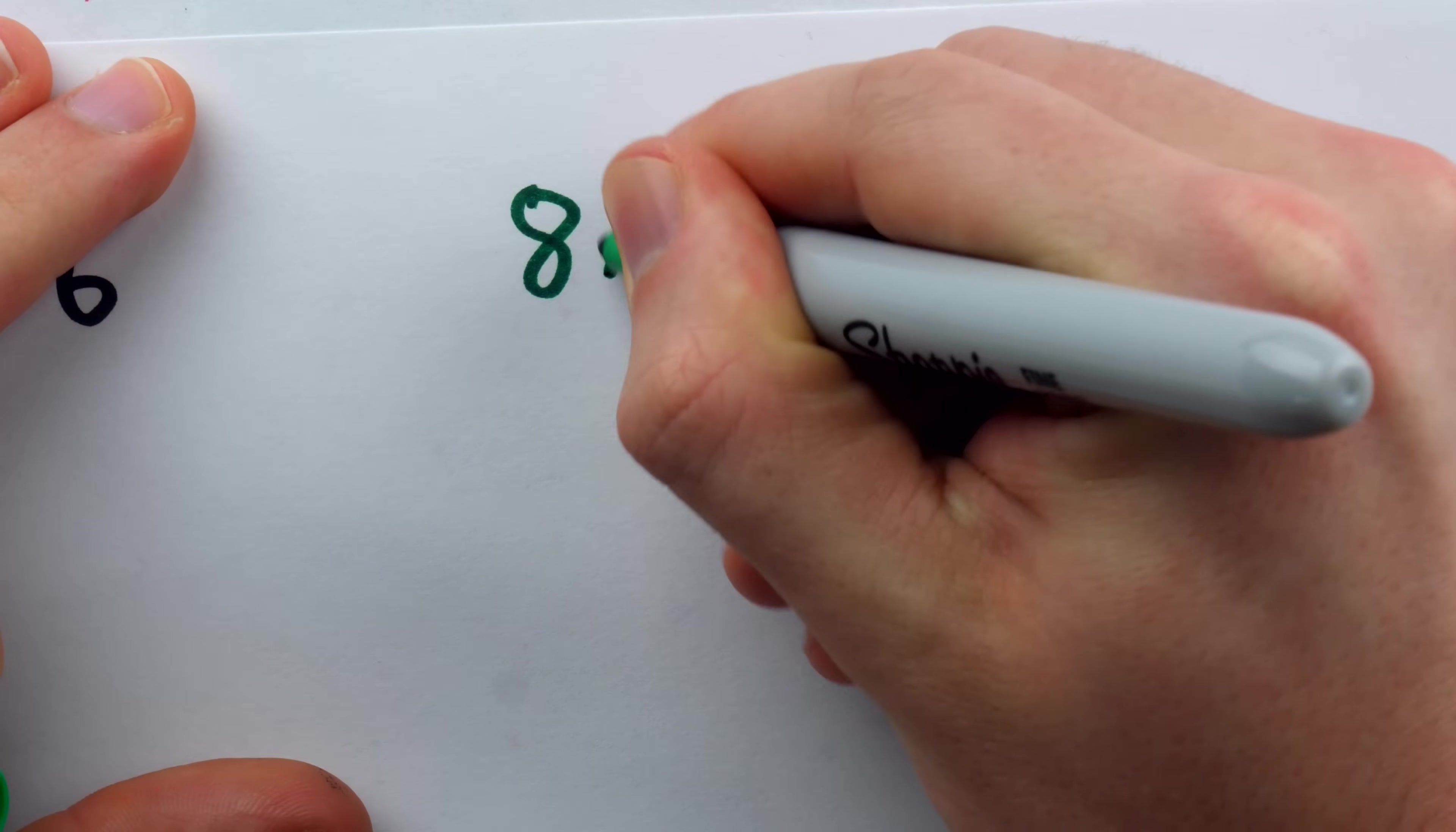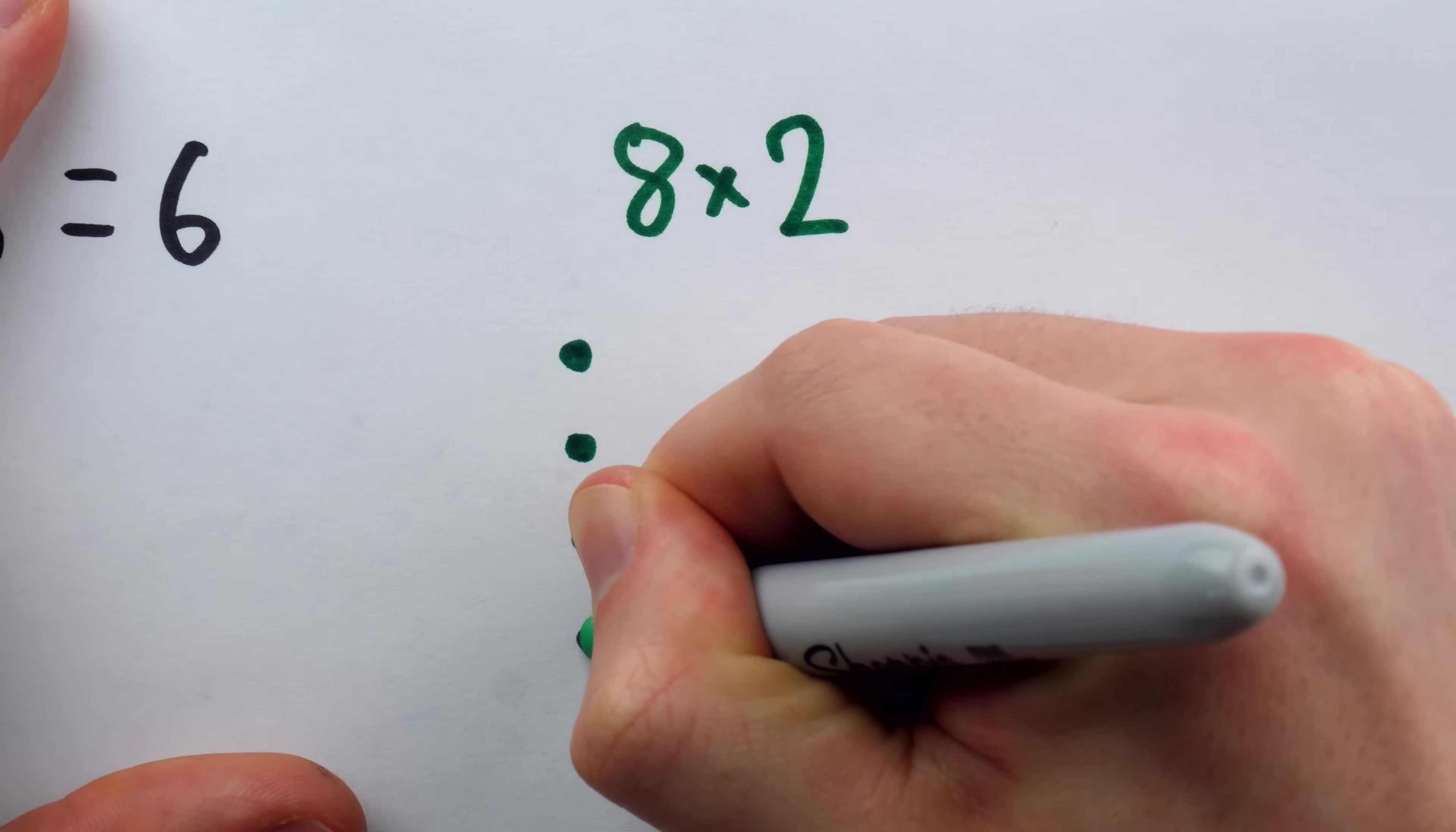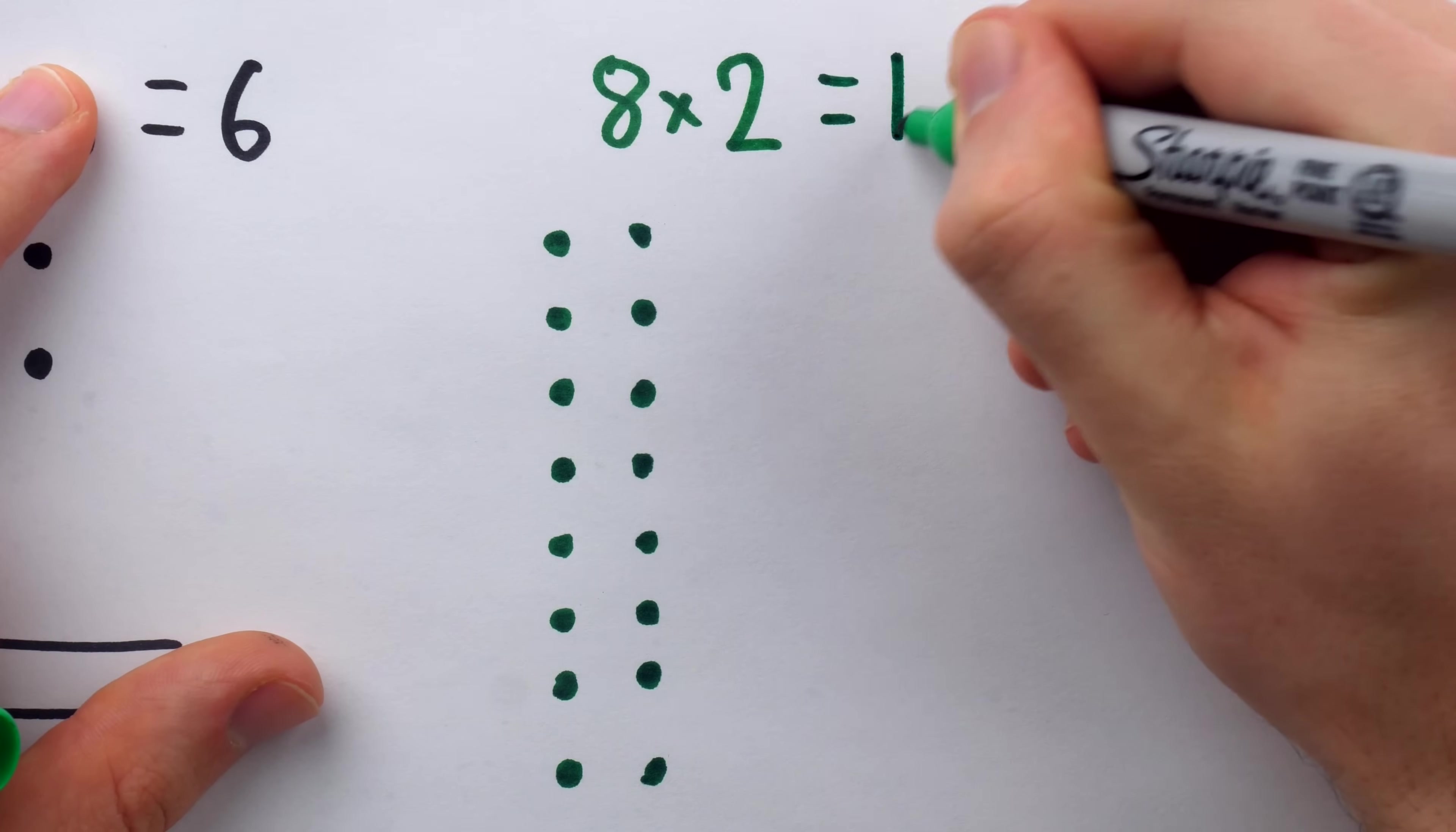If I'm in a pinch and need to do eight times two, well, I could just use that rectangle definition and say this is just eight dots two times. And I can count them up and realize this is equal to 16.